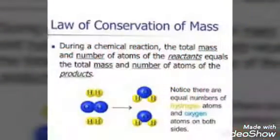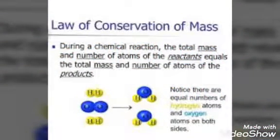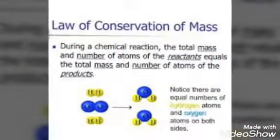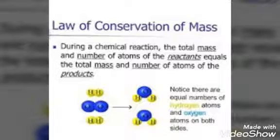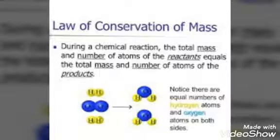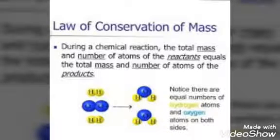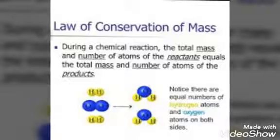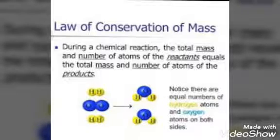The first law is the law of conservation of mass, which says during a chemical reaction, the total mass and number of atoms of the reactants are equal to the mass and number of atoms of the products.